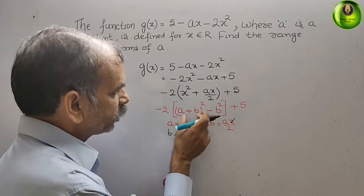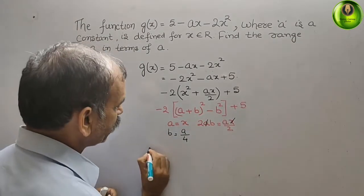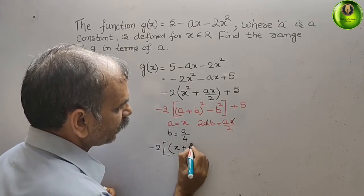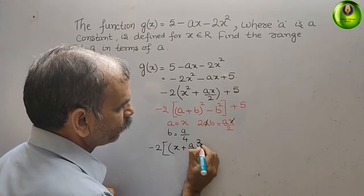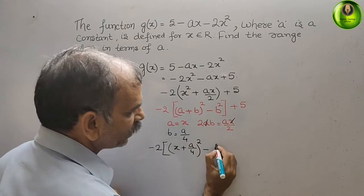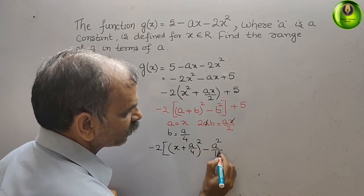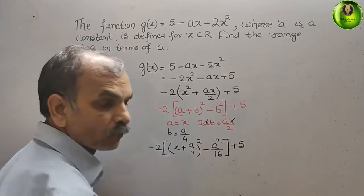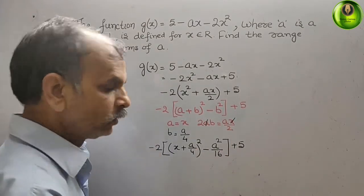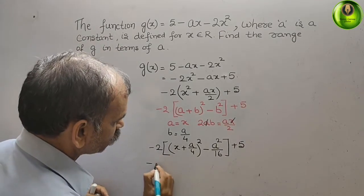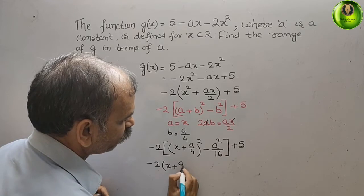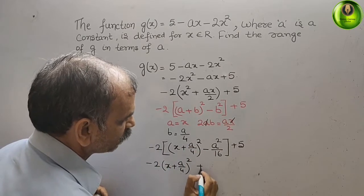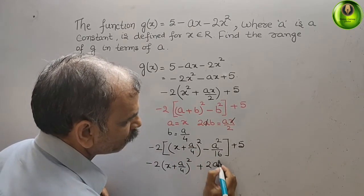Now substitute these two values. We get minus 2 times (x + a/4)² minus b², that is minus a²/16, plus φ. Opening the big bracket: minus 2 times (x + a/4)², and minus times minus is plus, so plus 2 times a²/16, plus φ.